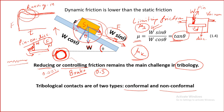We apply a load cell to stop the pin's movement. The force measured by the load cell is the friction force. Looking at the top view: the disc is rotating, friction force acts on the pin, and the load cell stops the movement and measures that force. The pin shape can be spherical, circular, or even rectangular — whatever shape you want.